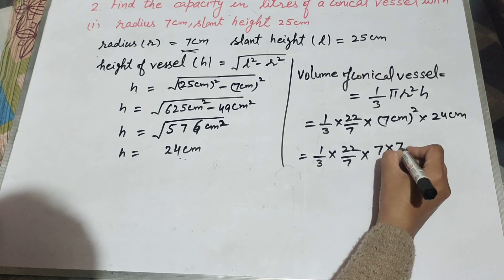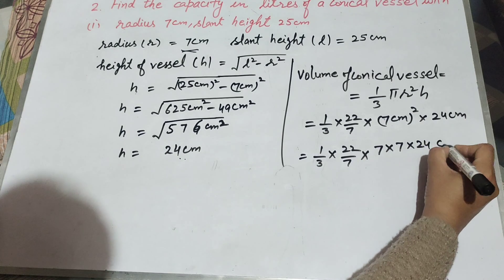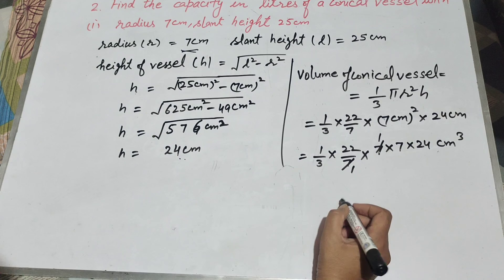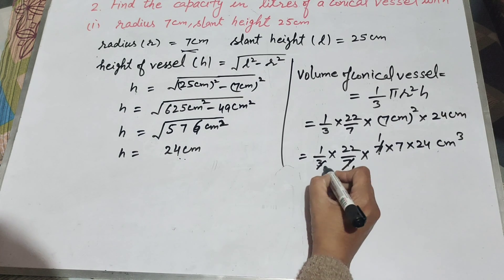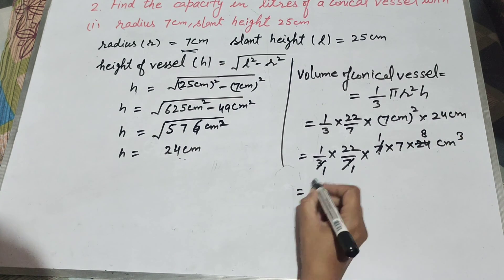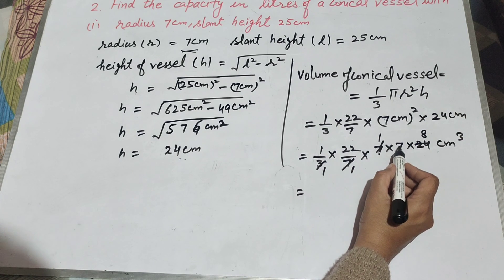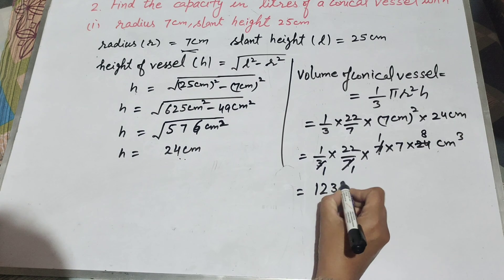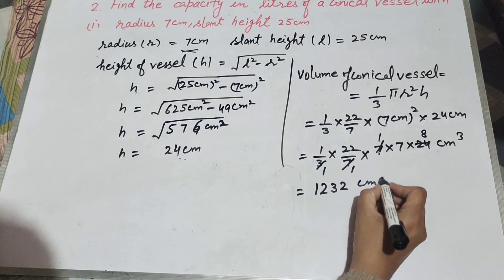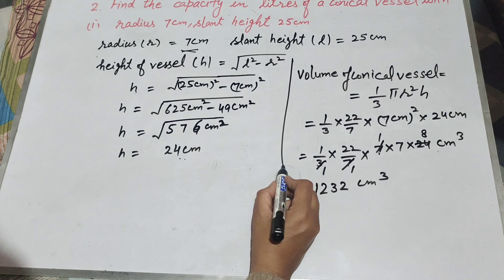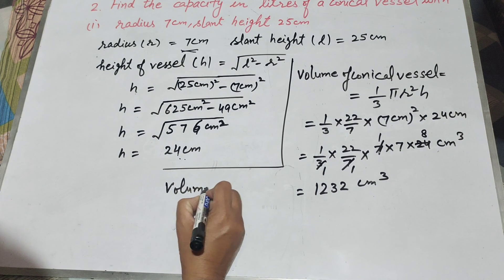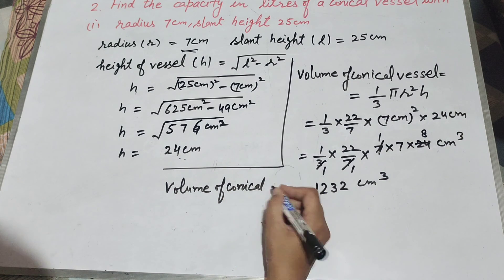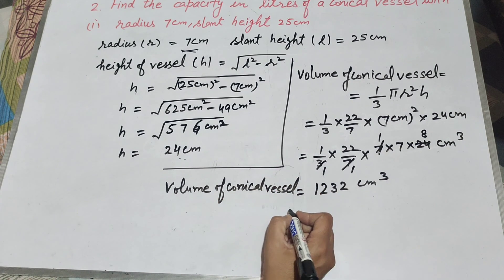So it is equal to one-third multiplied by 22 over 7 multiplied by 7 multiplied by 24 centimeter cubed. The 7 in denominator and 7 in numerator are cancelled. 3 and 24 are both cancelled on the table of 3. So 22 multiplied by 7 is 154, multiplied by 8 gives answer 1232 centimeter cubed. This is the volume of the conical vessel.